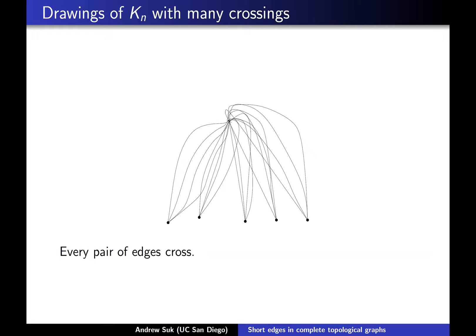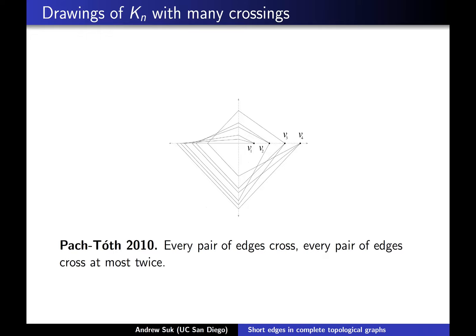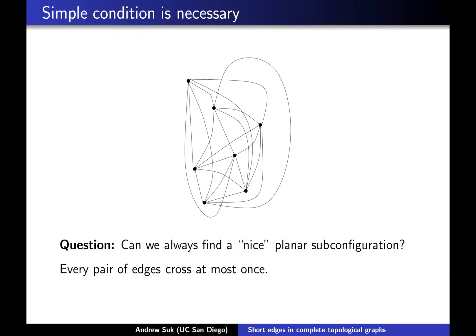If you wanted to, you could do something slightly more clever, which is draw the complete graph in this twisted way. This is what Pach-top did back in 2010. If you draw the complete graph in this twisted way, every pair of edges will cross exactly once or twice — so every pair of edges will cross — and moreover no two edges will cross more than two times. So if you want any hope of guaranteeing a nice planar subconfiguration, you're going to have to have the condition that every pair of edges cross at most once.